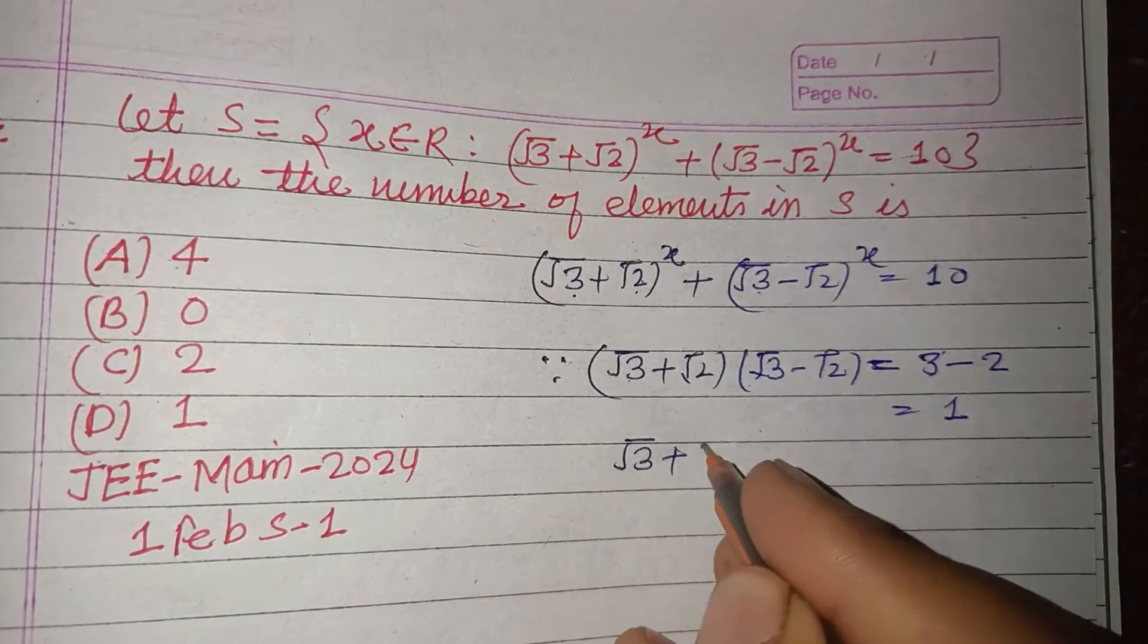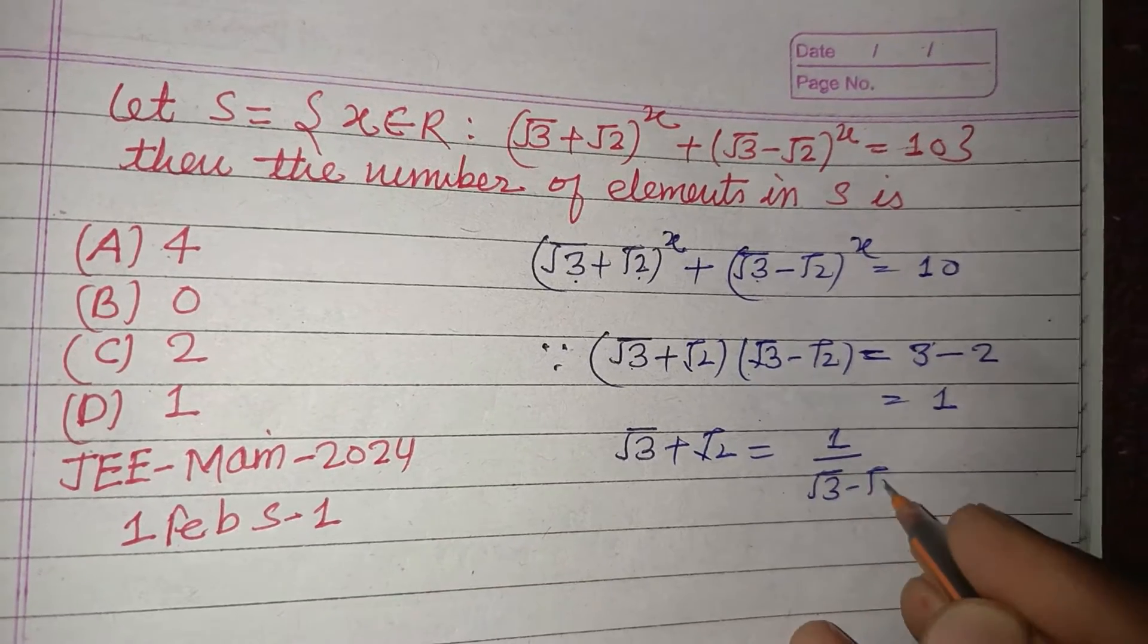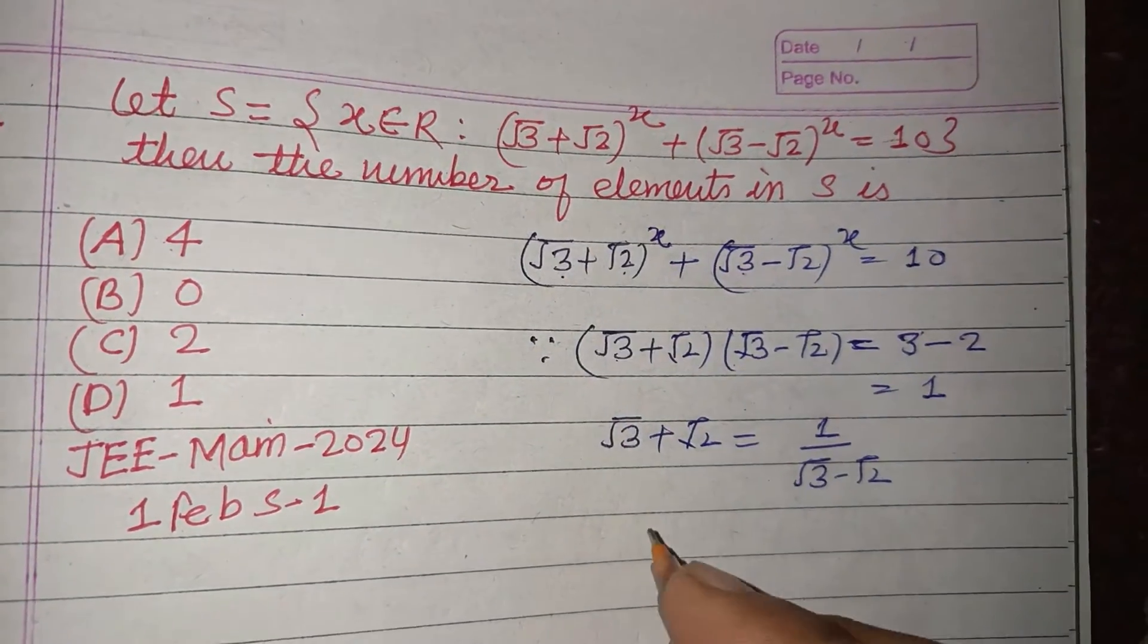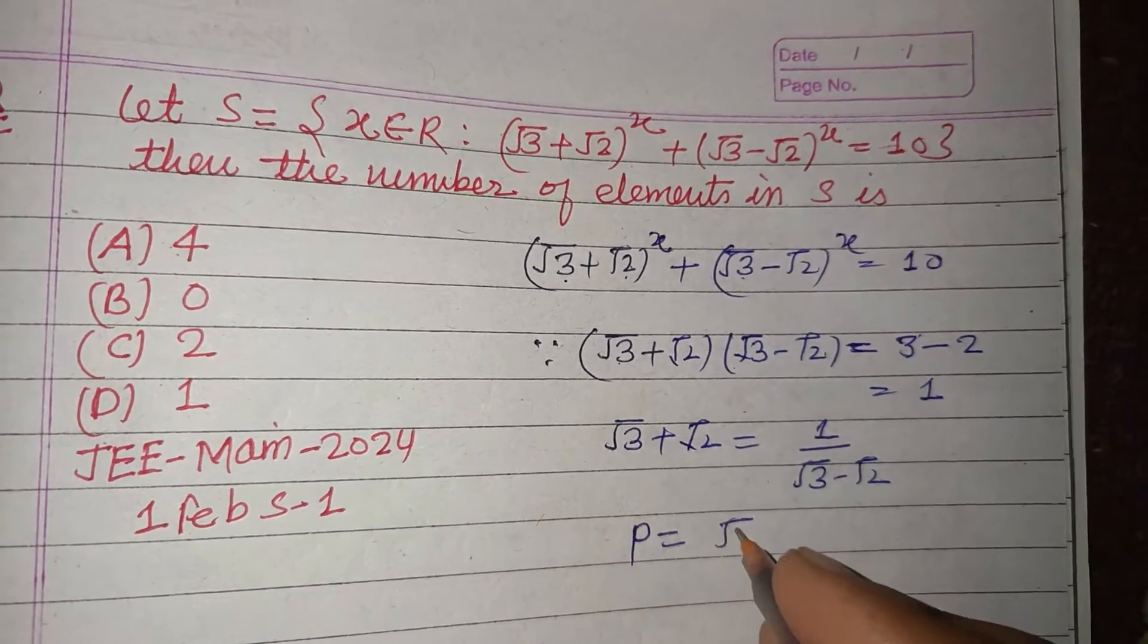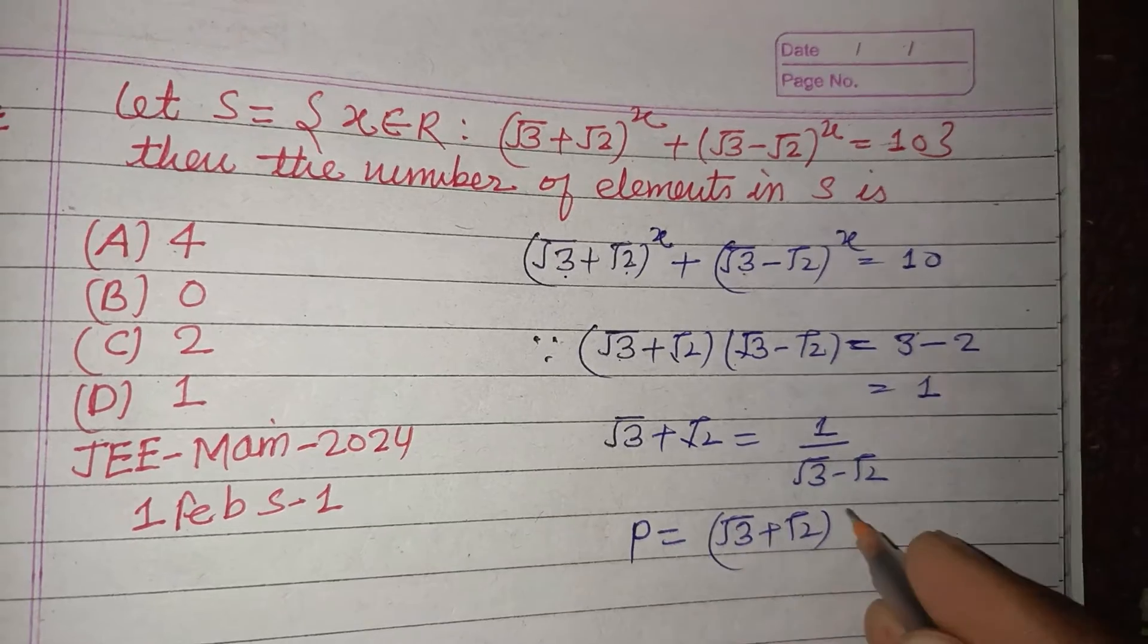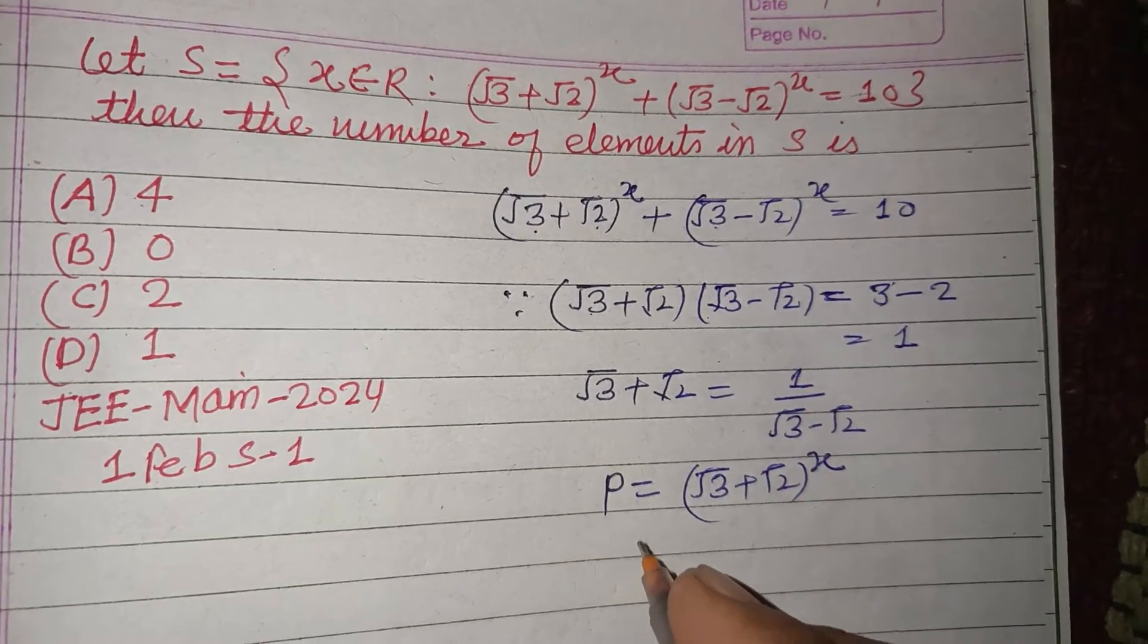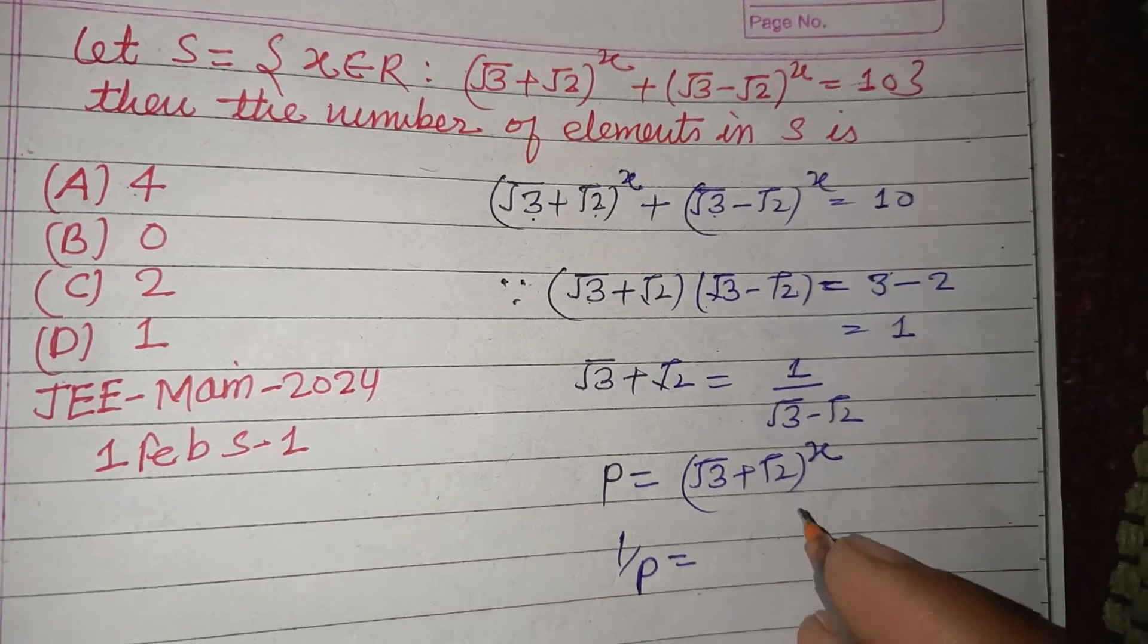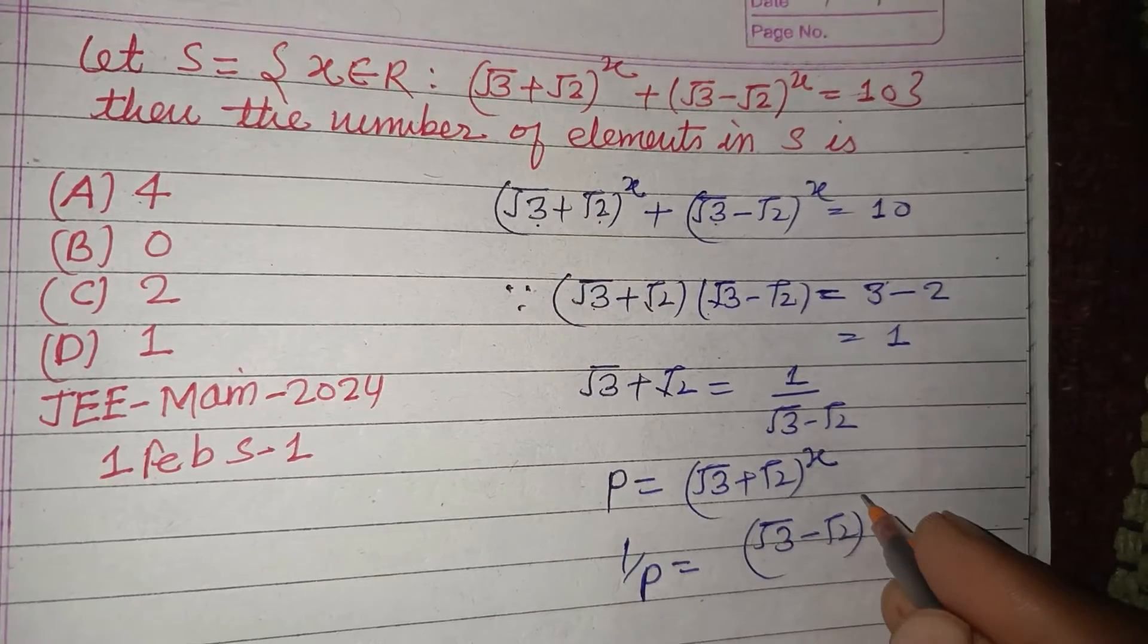Therefore, √3 + √2 = 1/(√3 - √2). So we can take p = (√3 + √2)^x. Then what is this? This is 1/p, which equals (√3 - √2)^x.